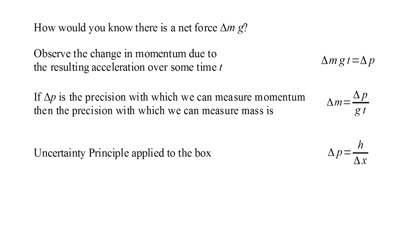So far we've discussed the uncertainty principle applied to photons. Later we'll see that it's a general principle that applies to any particle or object. Applying it to the box, we can say that the minimum uncertainty we can have in the box's momentum equals Planck's constant over the minimum uncertainty we can have in the box's position, delta x. Substituting this into the previous equation, we have that the minimum uncertainty with which we can know the box's mass, delta m equals Planck's constant over g times t times delta x.